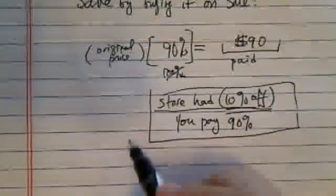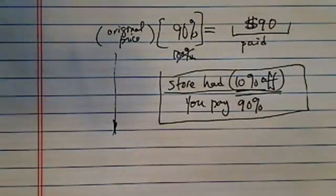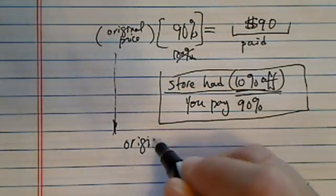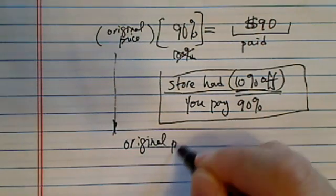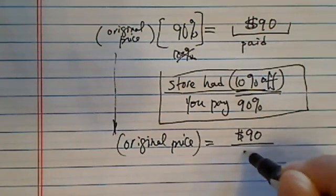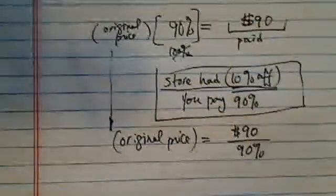So let's take this equation down here. So our original price. So basically we need to find out what our original price is. Our original price is equal to $90 divided by 90%.